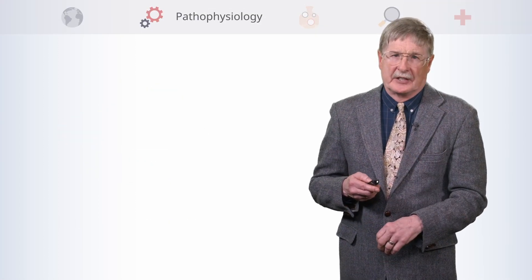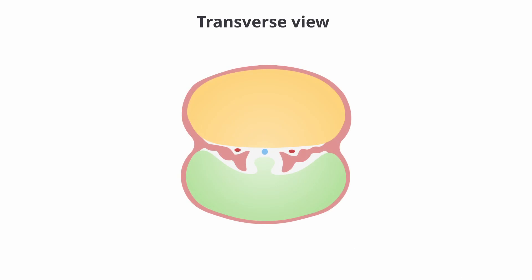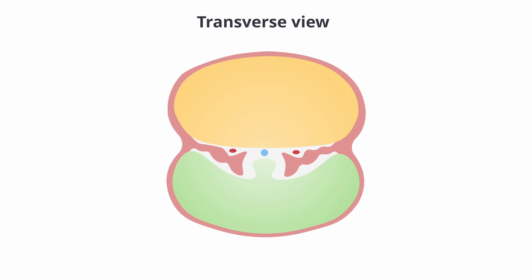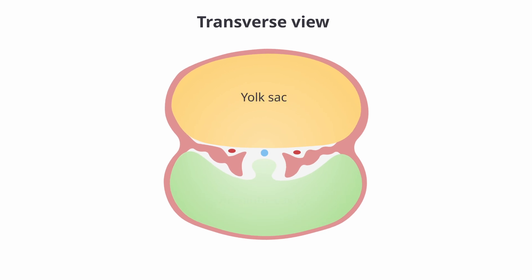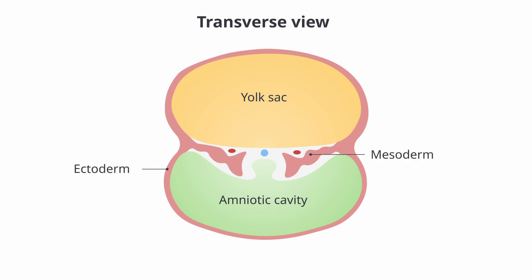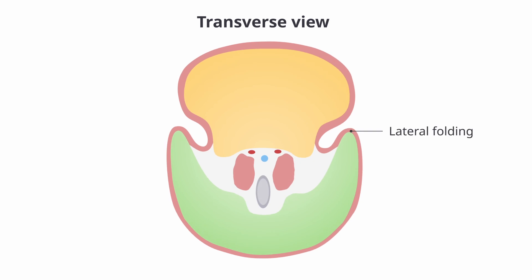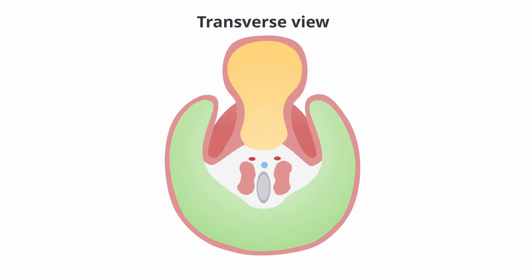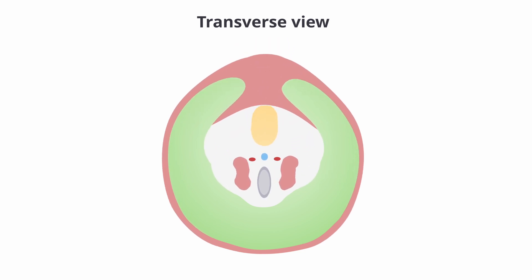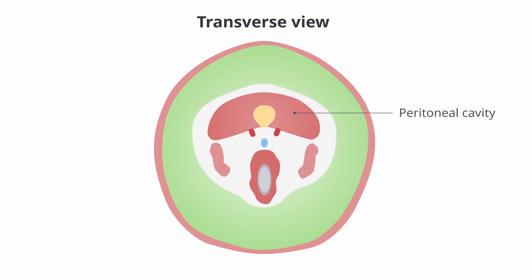For pathophysiology, we're looking at a very early embryo at about four weeks. This is a transverse slice — anterior at the top, posterior at the bottom. The yellow is yolk sac, the green is amniotic fluid, and you can see a lining of ectoderm and mesoderm. The embryo will go through a variety of folds to finally develop an abdominal peritoneal cavity that, in the case of gastroschisis, has a lateral wall defect.